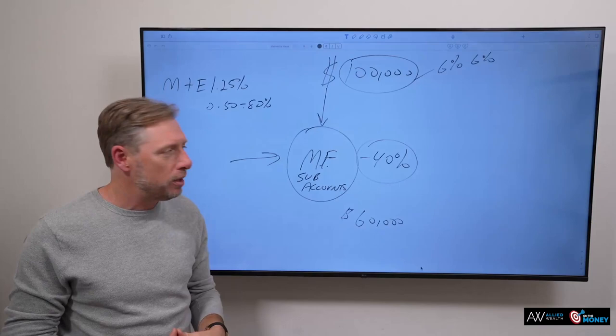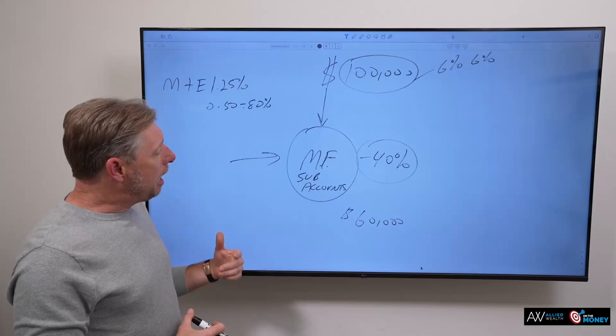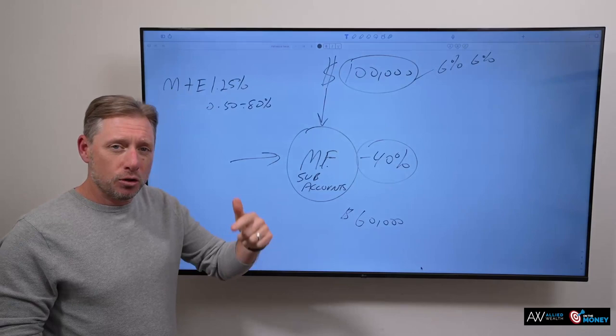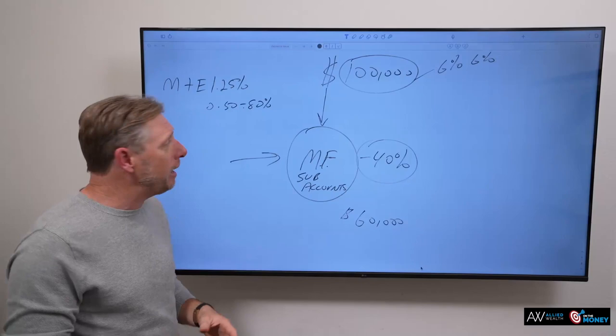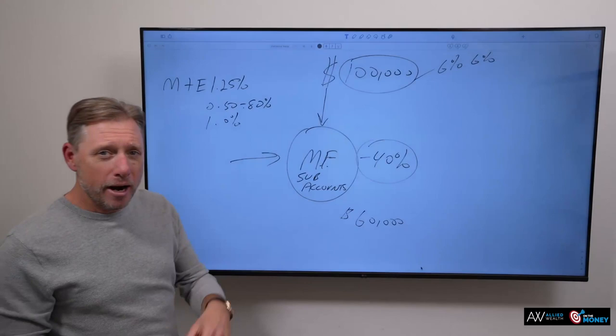And maybe that fee is 0.5 basis points per year or half of 1% per year. And the insurance company says, cool, no problem. We'll pay that fee, no problem. But what we're going to do is we're actually going to mark that fund up and charge a higher price than PIMCO is charging us and charge that back to our policyholders or the people that own this variable annuity contract. And those are called internal expenses on the sub-accounts. And those average 1% or higher in some cases.